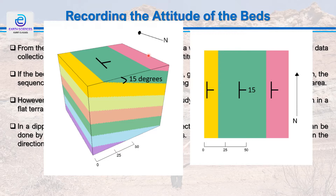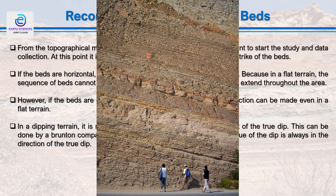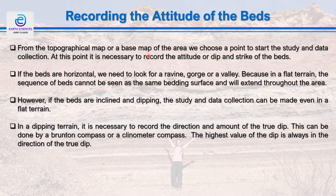In dipping terrain, it is necessary to record the direction and amount of the true dip. This can be done by Brunton compass or clinometer compass. The value of the highest dip is in the direction of the true dip, so it is preferable to take the traverse along this particular direction.